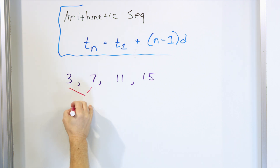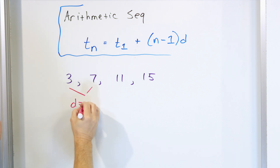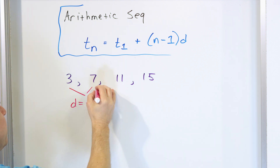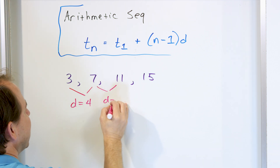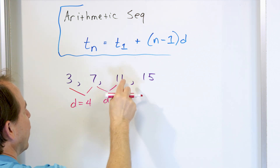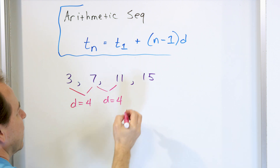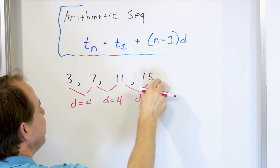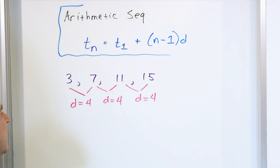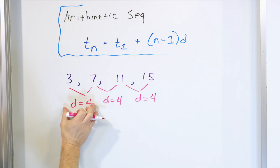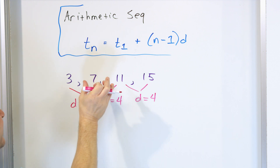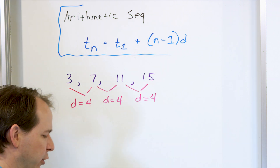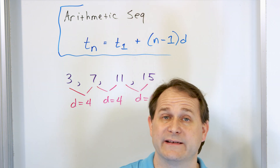7 minus 3 is 4, so the difference d is equal to 4. Then 11 minus 7 is again 4, so d equals 4. And 15 minus 11 is also 4. Because the difference between each pair of adjacent terms is the same, this means it's an arithmetic sequence.